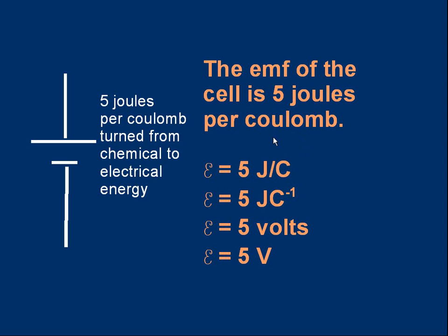We have a special symbol for electromotive force — what my physics teacher used to call a curly E. We don't use an ordinary E because that's too easily confused with energy, so the proper name is a script E, but I'll call it curly E. The electromotive force, curly E, is five joules per coulomb — we get five joules of electrical energy for each coulomb that passes through the cell. We could write this as five JC to the minus one, which means exactly the same thing. Importantly, a joule per coulomb is called a volt, so five joules per coulomb is the same as five volts. The symbol for a volt is a capital V, so finally we can say the EMF is five volts.